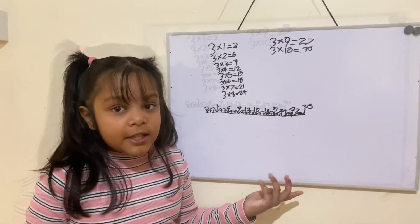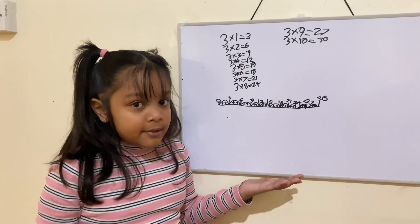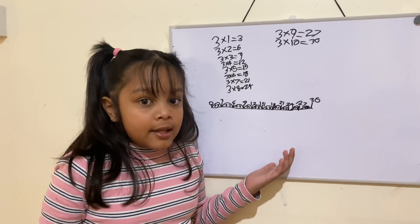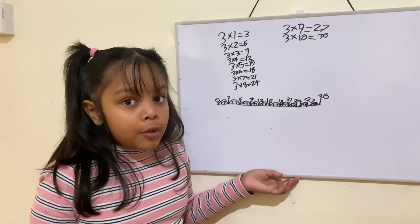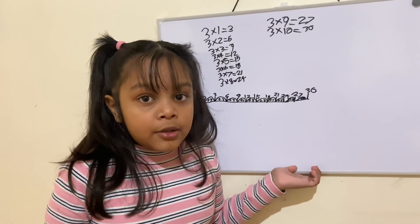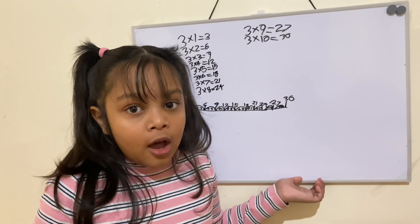This is how you do the 3 times tables on a number line. If you do any times tables with a number line, you would know the answer. You could try this at home. Just get a sheet of paper and write it.